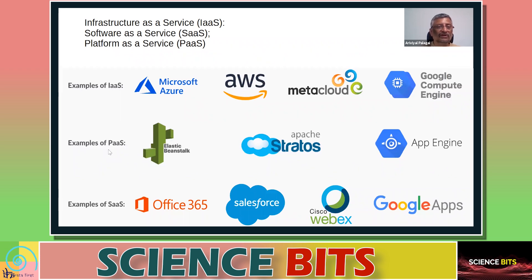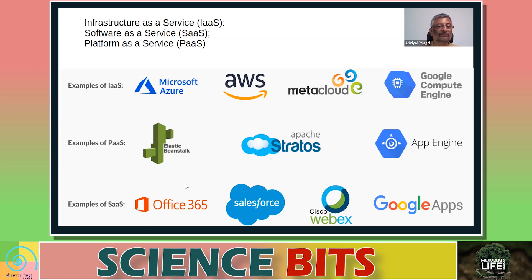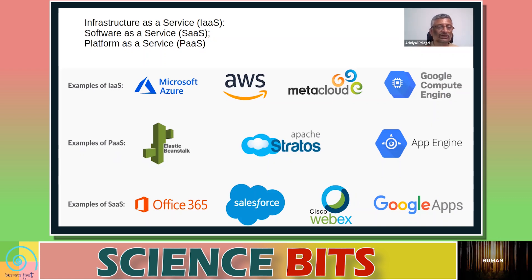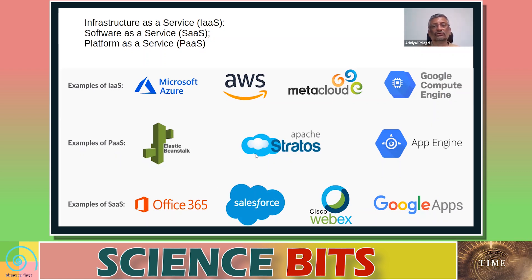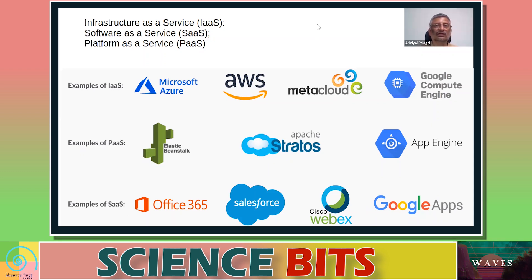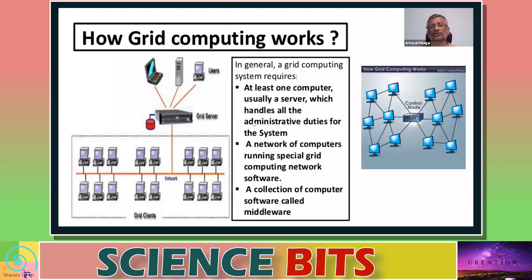You can also have software as a service — for example, Office 365, where you don't download the whole application to your system, or Cisco WebEx or Google Apps. You also have platform services such as App Engine or Elastic Beanstalk — these are platform services provided by cloud computing.